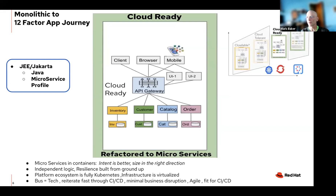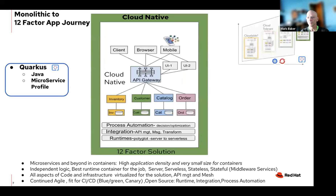Of course there are all kinds of flavors — you might have a part cloud-tolerant, part cloud-ready application. Moving on to cloud-native, we start layering in other types of cloud-native services for process automation, integration, and runtimes. All the different containers can scale up and scale down. We can service all types of paradigms — server-based or serverless, stateful or stateless. You can start doing true CI/CD because of things like Quarkus, where the microservices are small enough and fast enough.